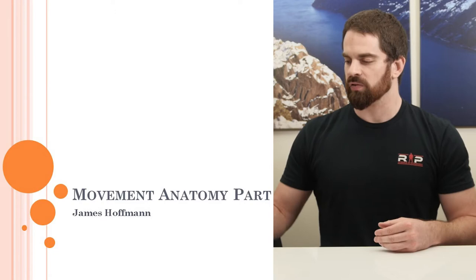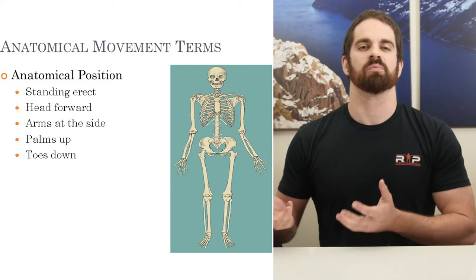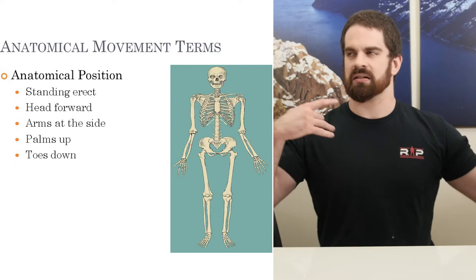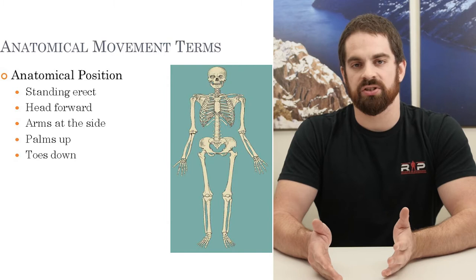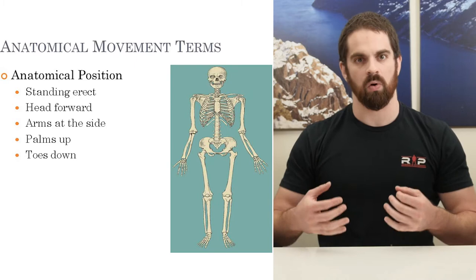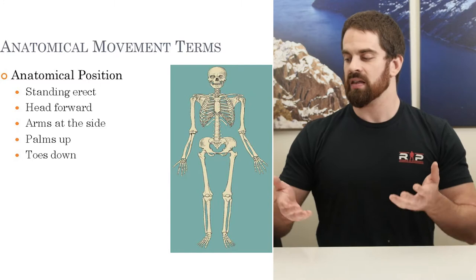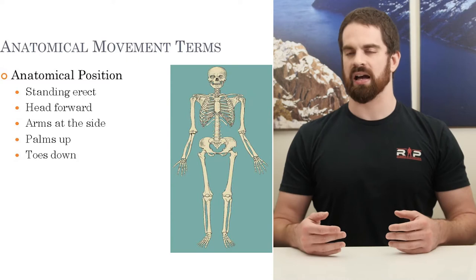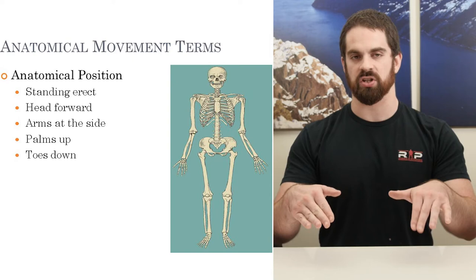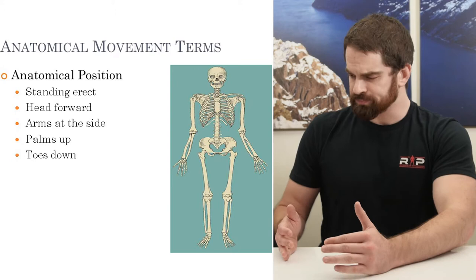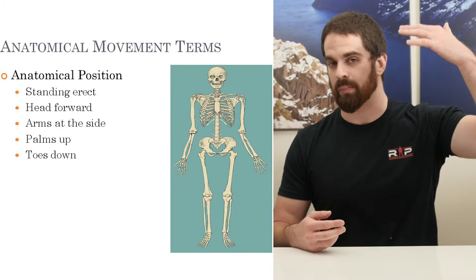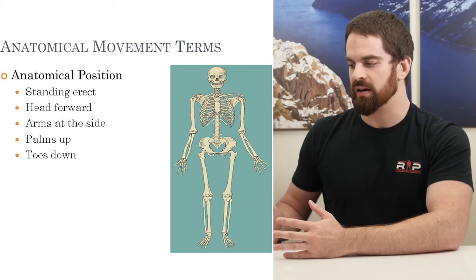The first thing we have to understand is the anatomical position. The reason we bring this up is because movement of the body in time and space can be described any number of ways, which makes it really difficult to define front, back, left, and right. So we developed the anatomical position to give ourselves a frame of reference whenever we want to describe movement or things placed within the body. The person is standing upright, head facing forward, arms down at the sides with palms up, and toes pointed down or neutral.